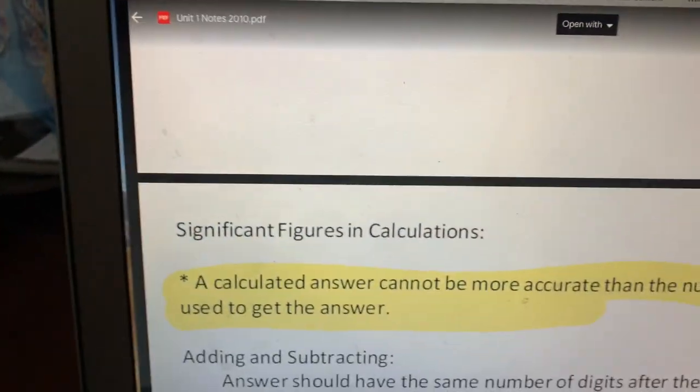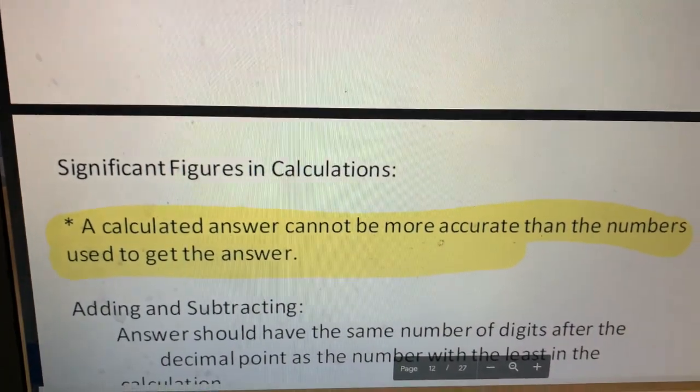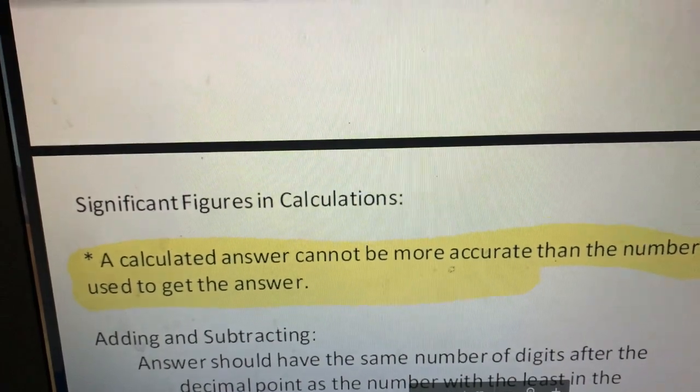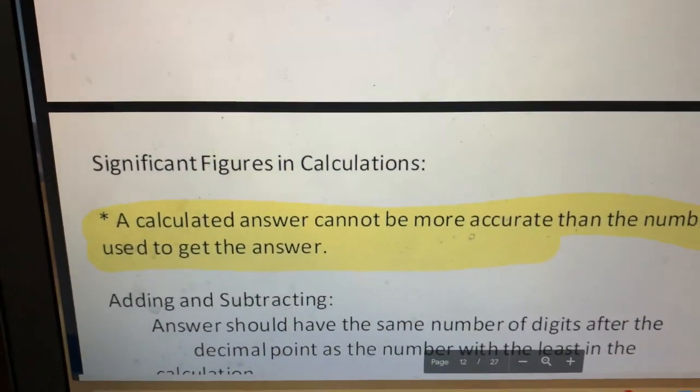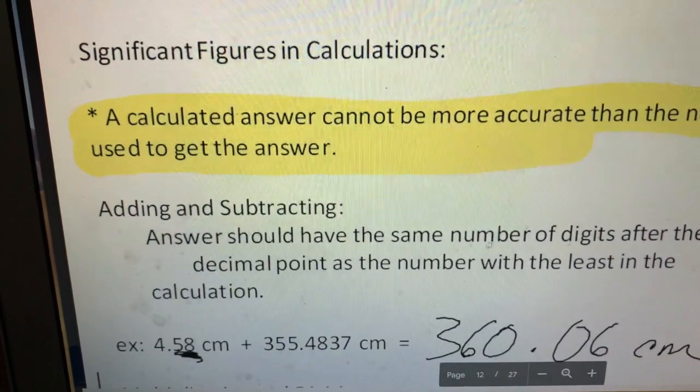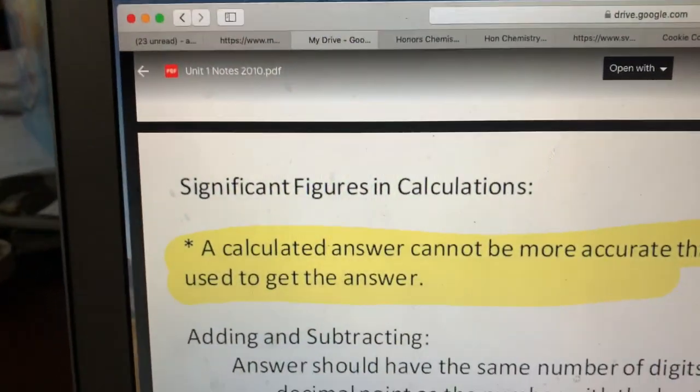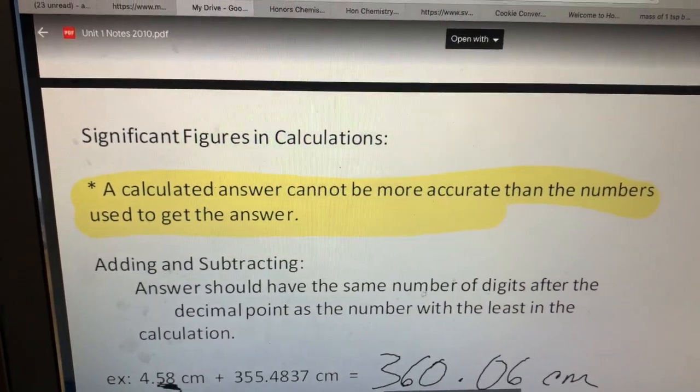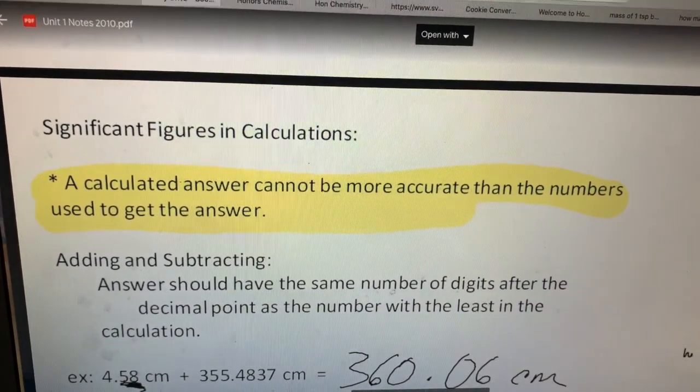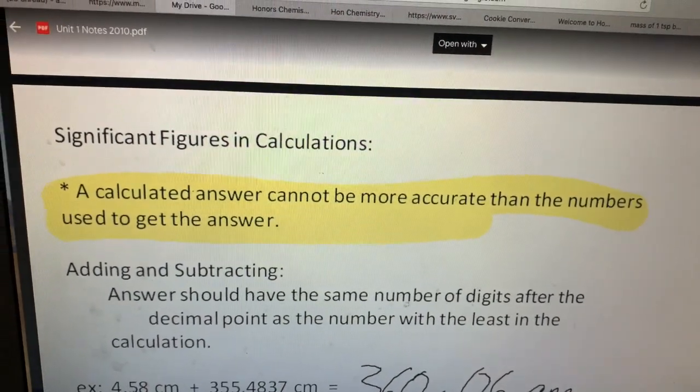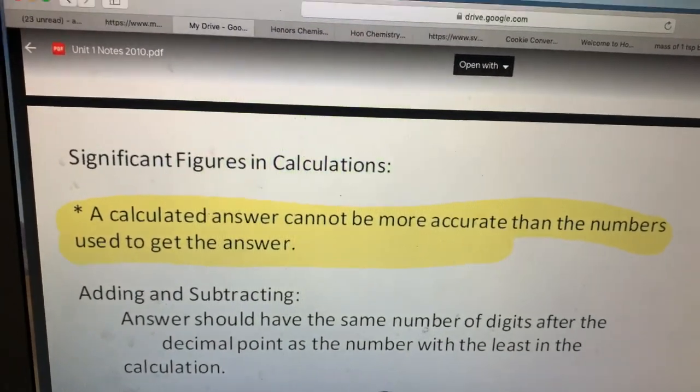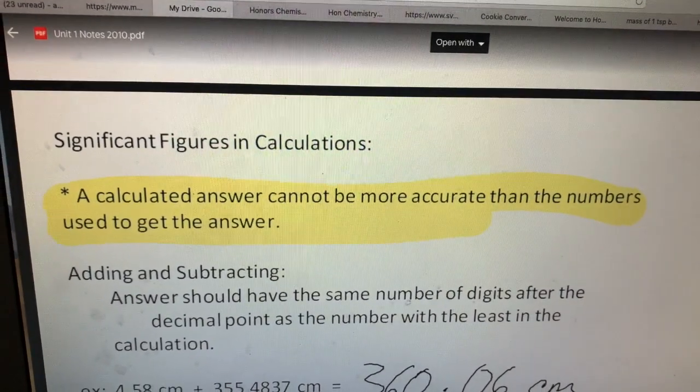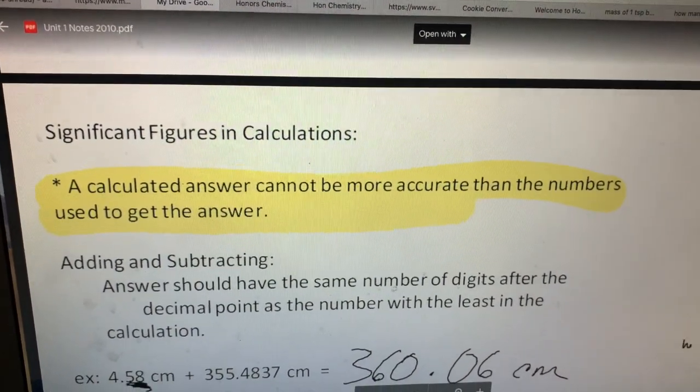So let's move on and why are we doing all of this? Well what's the purpose? Well number one purpose was to make sure that you make measurements correctly. Again, everything the instrument shows you and an estimated digit. The second reason why we go through this is to make sure when you do calculations you are representing those measurements correctly. A calculated answer cannot be more accurate than the numbers used to get that answer. Please please please star that in your notes. That is highlighted. That is a big deal.